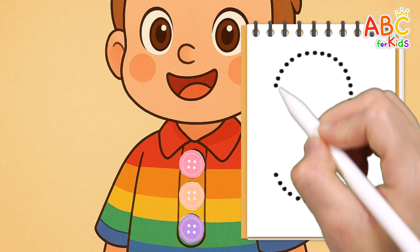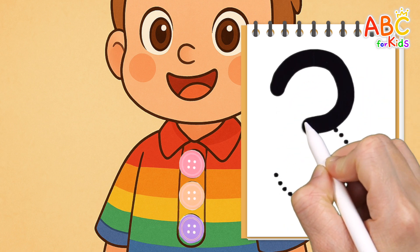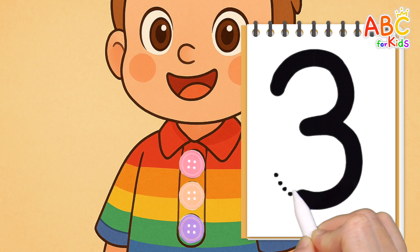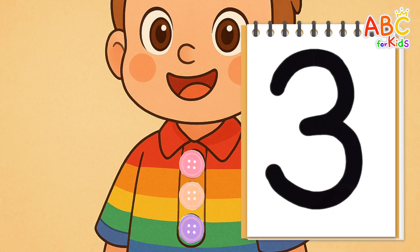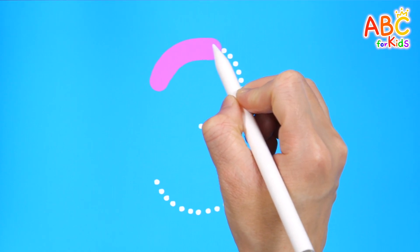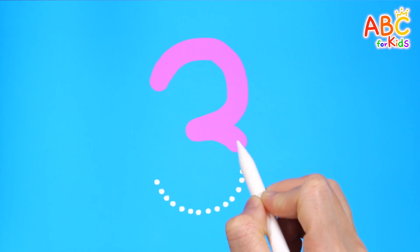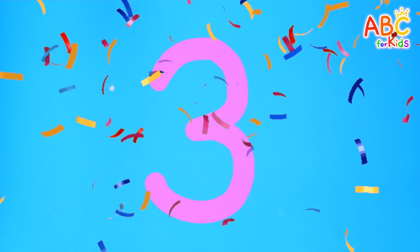Let's trace the number three along the dotted lines. Three. And I'll write the number three on the sky blue board. Three. Good job.